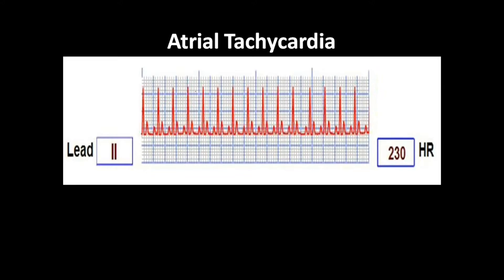Here you can see the P wave, QRS complex, and T wave. All these waves appear at a very short duration — less than 0.2 seconds, within one big square. The complexes appear at a very short duration.